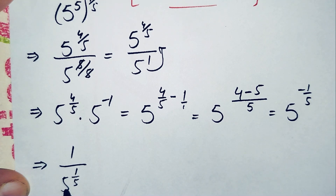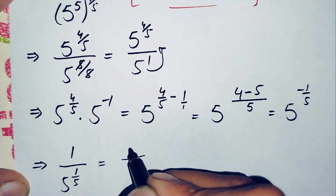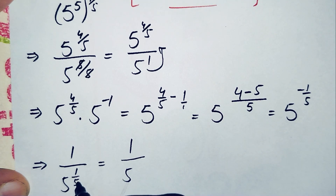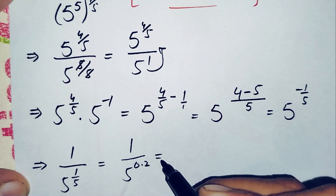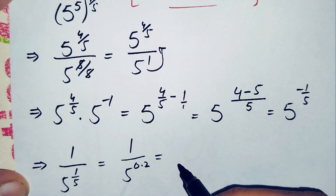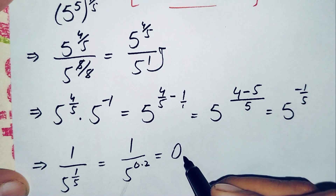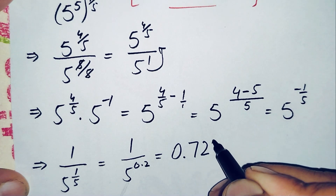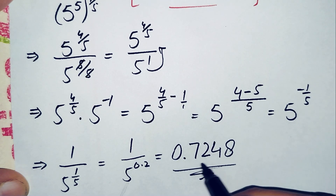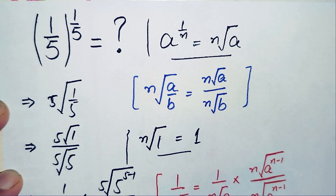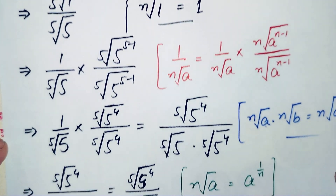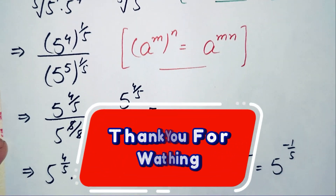This is our answer in fraction form. To further simplify, we substitute 1 over 5 approximately equals 0.2, so we have 1 divided by 5 raised to power 0.2. Calculating this using a calculator gives our final answer in decimals: 0.7248. So 0.7248 is the value of this interesting exponential math problem. If you like this video, don't forget to subscribe to my YouTube channel for more interesting math videos. Thanks for watching.